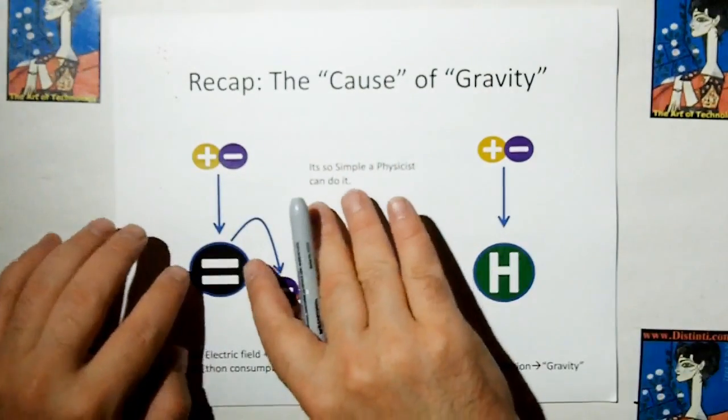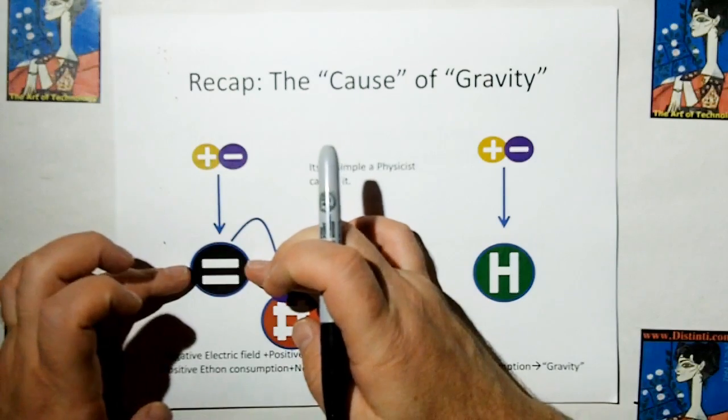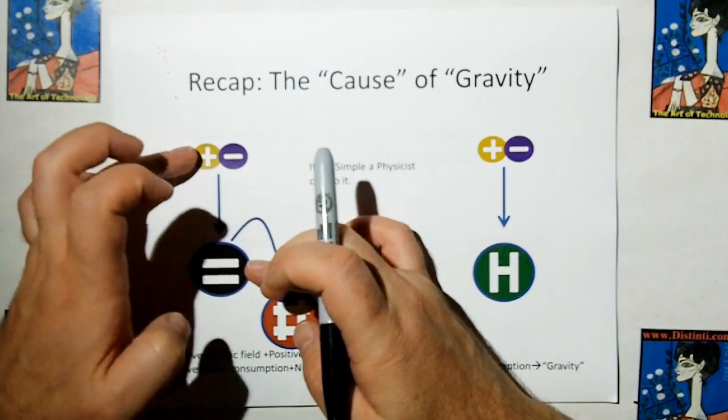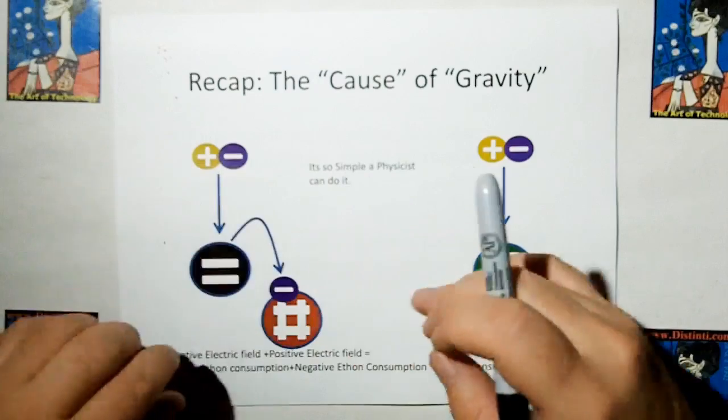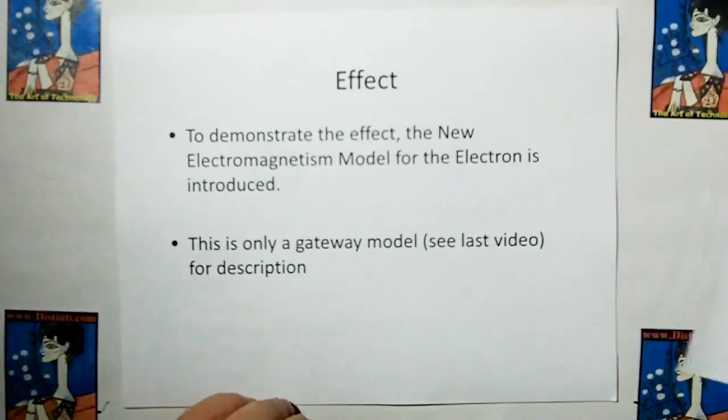That's due to the negative charges consuming the positive ethons and the positive charges consuming the negative ethons. Now that's the cause.